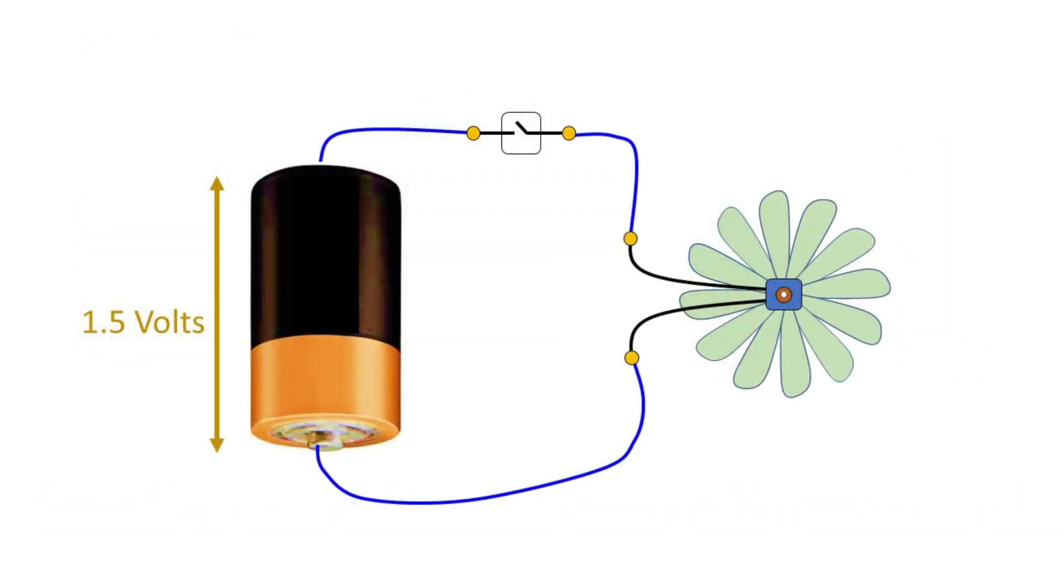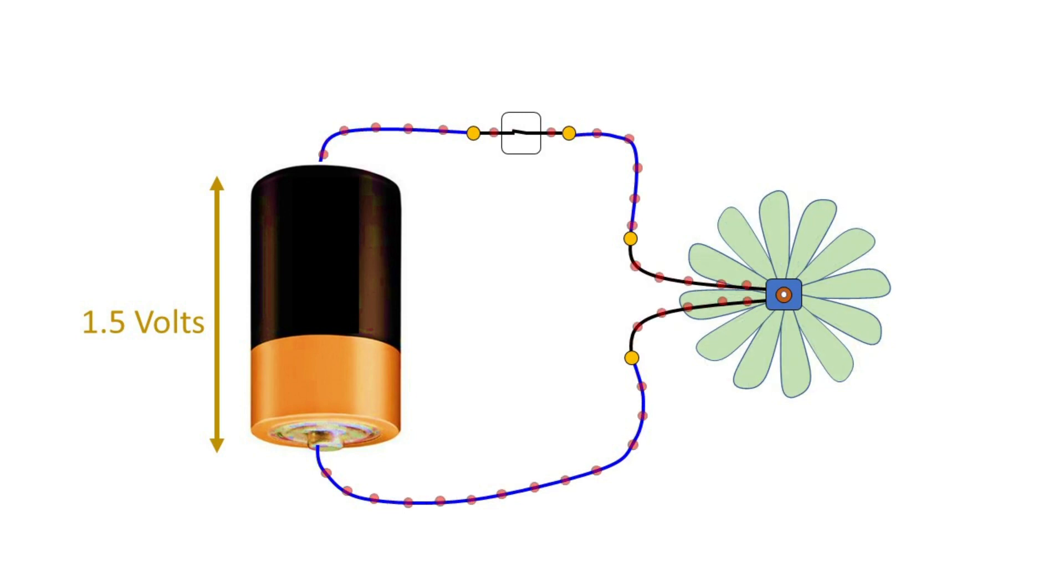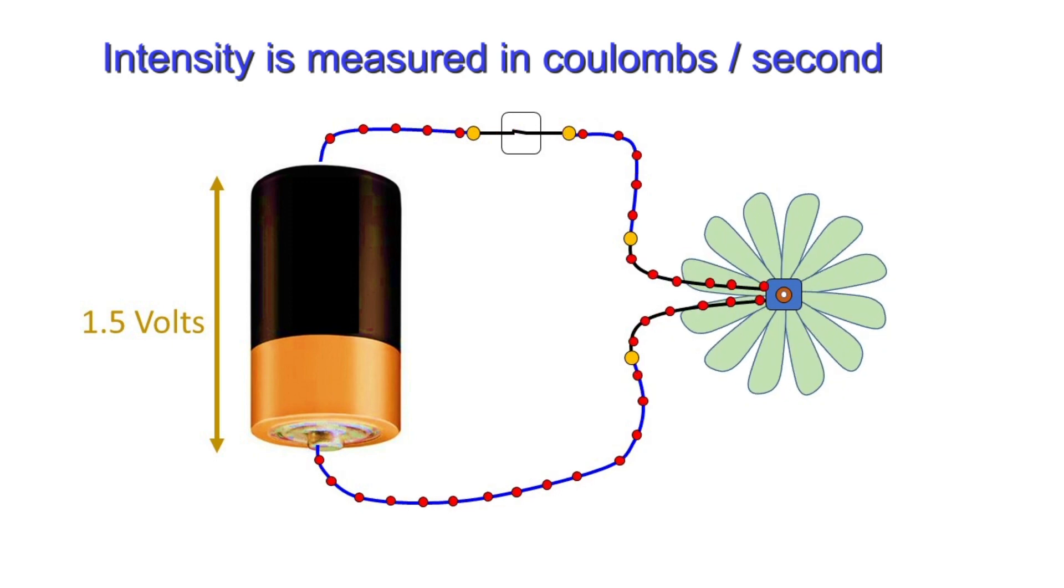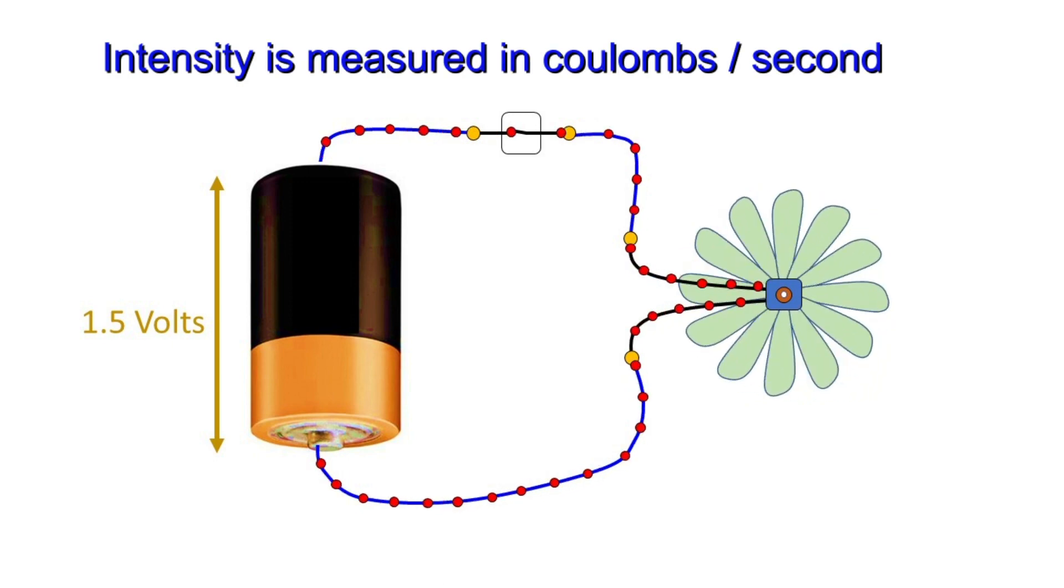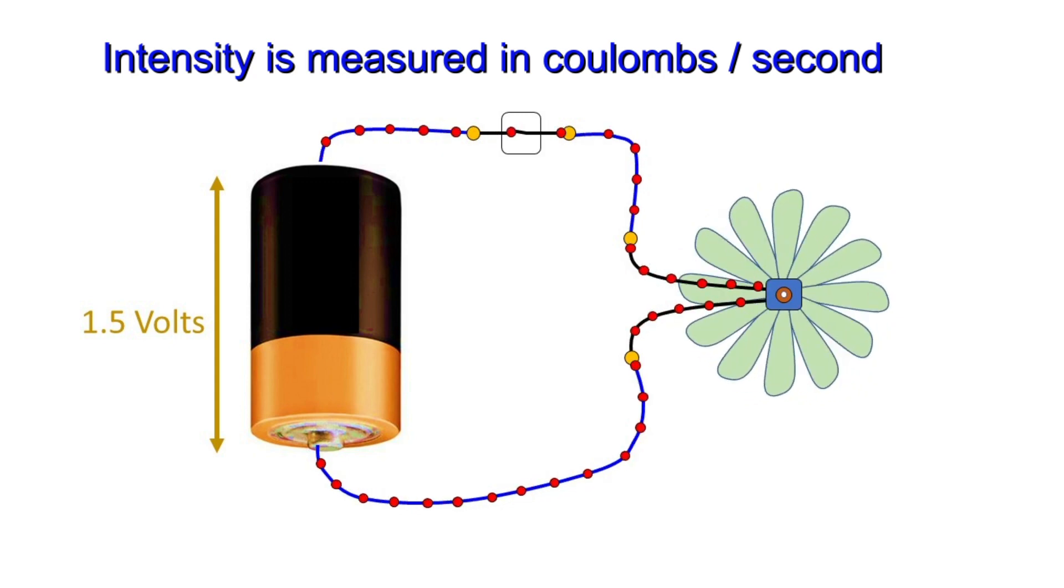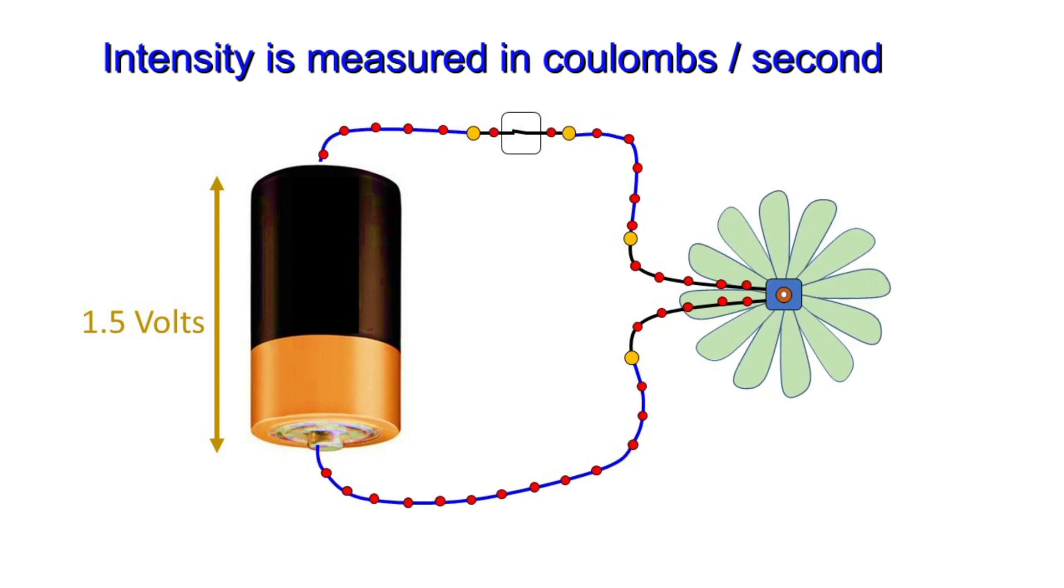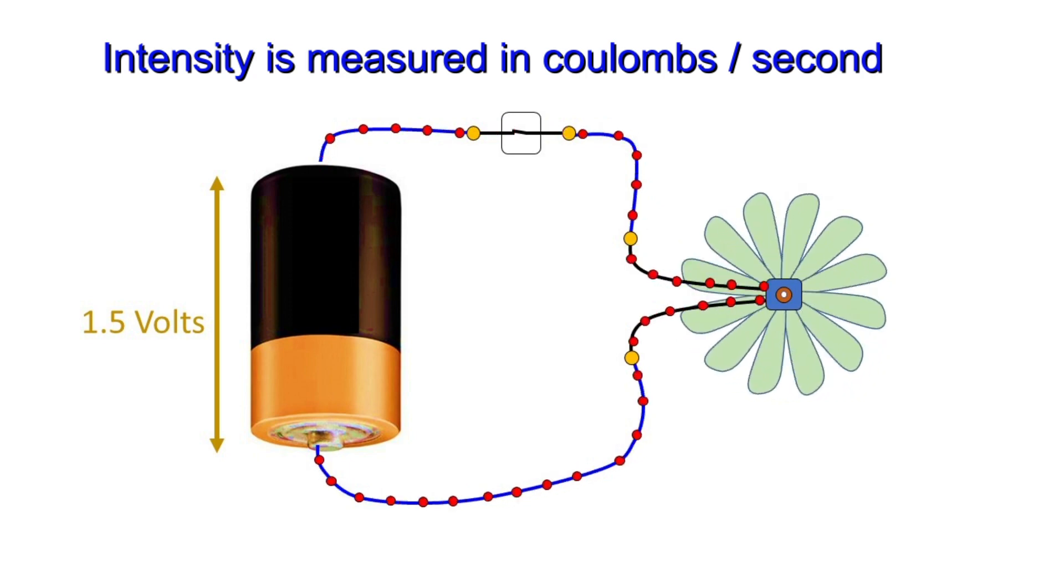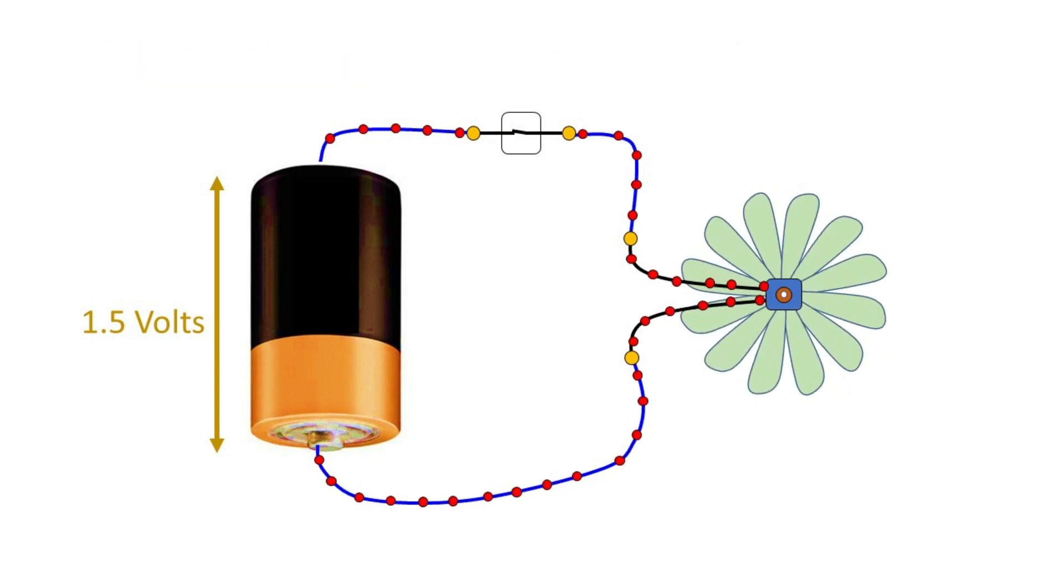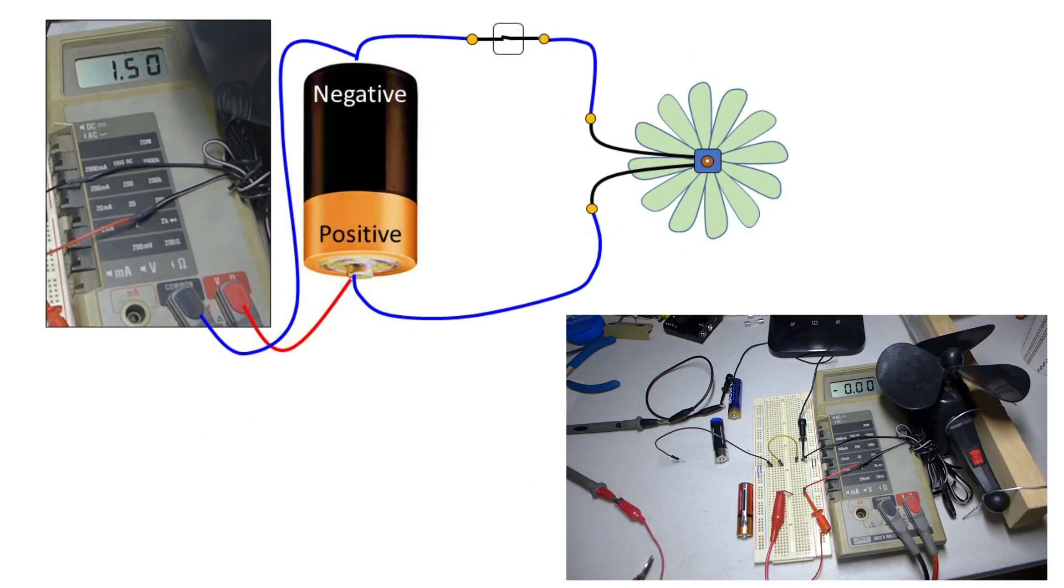Current. When electrons transit inside one conductor from one place to another, a current is formed. Its intensity is a number that expresses how many of them pass through a place in a given time. It is measured in coulombs per second. The unit of charge is always the coulomb, and second is always the time unit. It is never expressed in coulombs per hour or per month. It is always measured in coulombs per second.